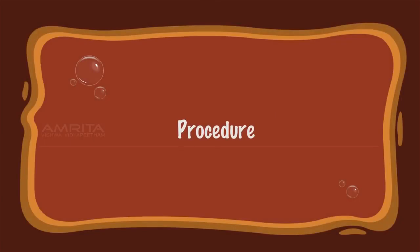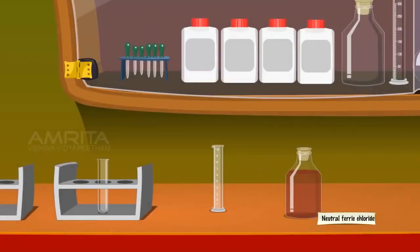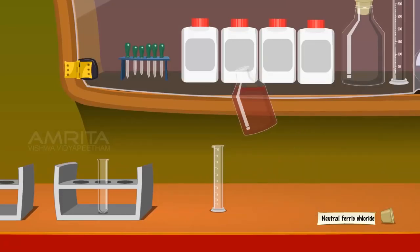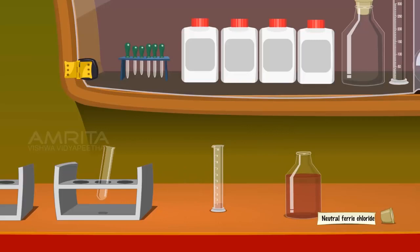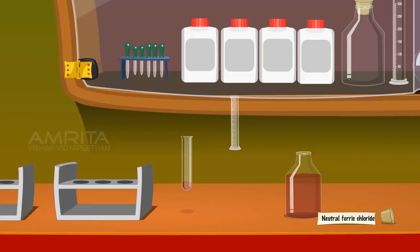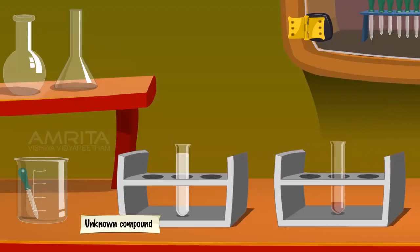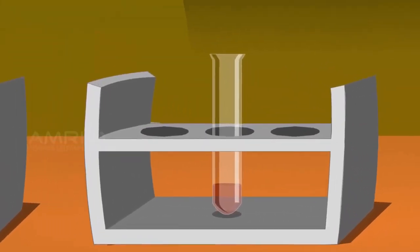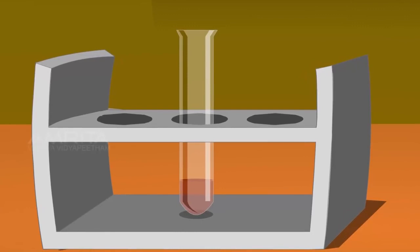Ferric chloride test. Procedure: Take a measuring jar and pour 1 ml of neutral ferric chloride into it. Pour it into a dry test tube. Add 2-3 drops of the given liquid into the test tube. Phenol on reaction with neutral ferric chloride gives a violet colour due to the formation of a complex.